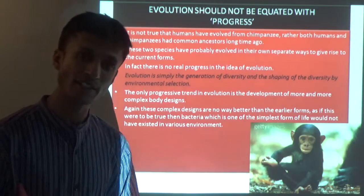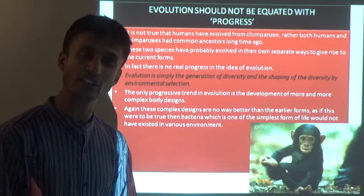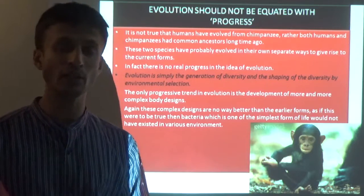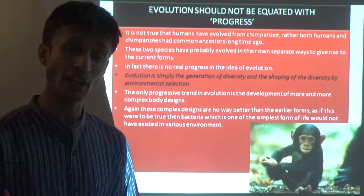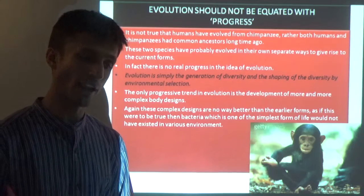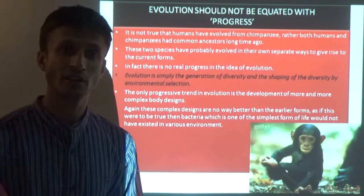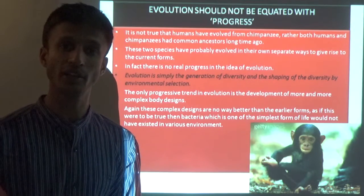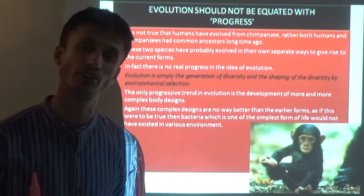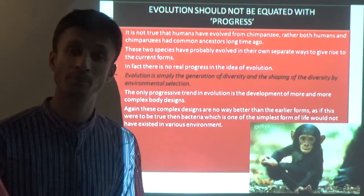First, one cell does all the work. Then tissues are made, each specialized for a particular function. Then organs become more and more specific - for example, the stomach handles digestion, secreting gastric juice, carrying out more specialized functions. So body design becomes increasingly complex - from generalized to more and more specialized structures, much like how education went from one teacher teaching all subjects to specialists teaching only physics, or only chemistry, or only biology.